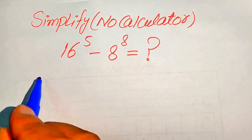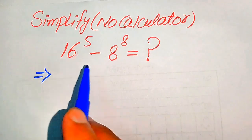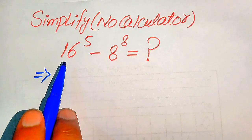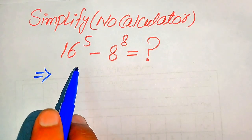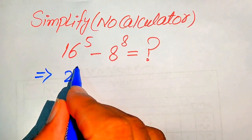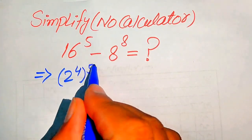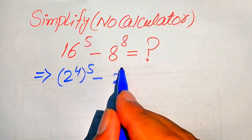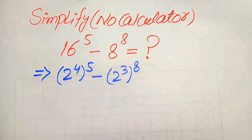First we need to focus on the bases of these terms and write the bases into the prime factors form. The prime factors of 16 equals 2 to the power of 4, and its whole power is 5, minus the prime factors of 8, which are 2 cubed, and its whole power is 8.